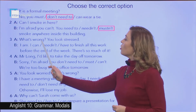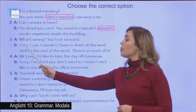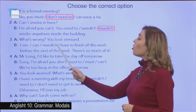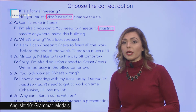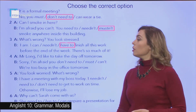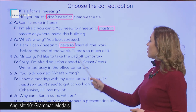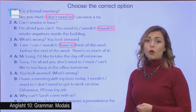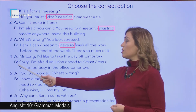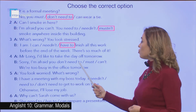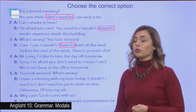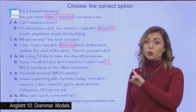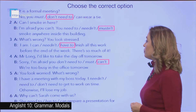Number three: 'What's wrong? You look stressed.' 'I am. I ___ finish all this work before the end of the week.' Since I am stressed, it means I have to finish all this work before the end of the week — there's so much of it. Number four: 'Mr. Long, I'd like to take the day off tomorrow.' 'I'm sorry, I'm afraid you can't — we are too busy in the office.' So since they are too busy, the boss says you can't take the day off.